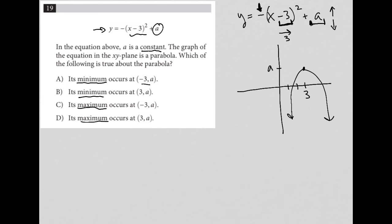And we see 3 and A or negative 3 and A represented here. So because our parabola is facing downward, this vertex here represents the maximum.